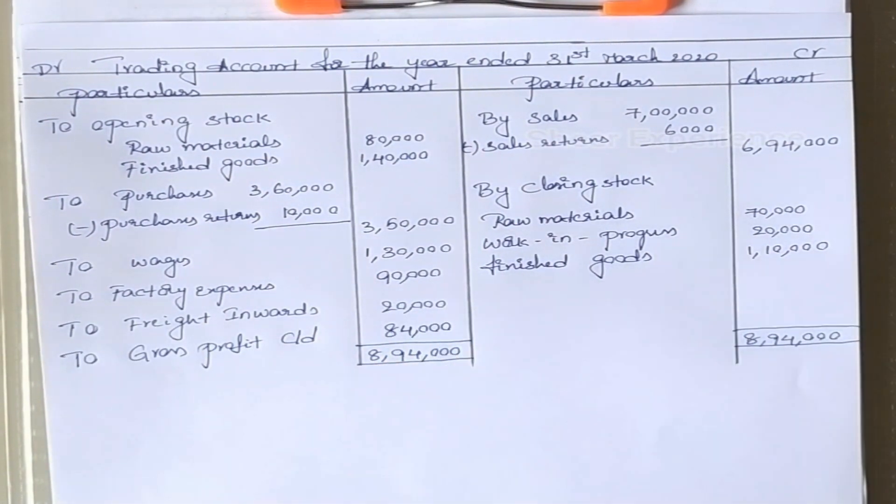Gross profit is 84,000. Hope you guys have understood the explanation. If you think this video is helpful, do not forget to click the subscribe button. In the next video we will solve problems related to the profit and loss account. Thanks a lot for watching.